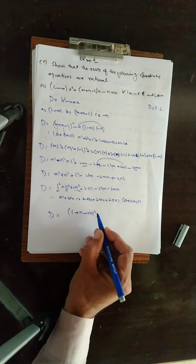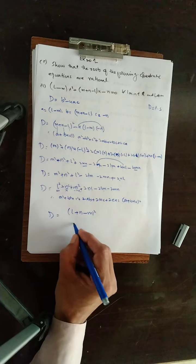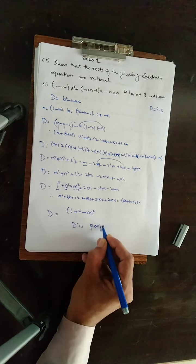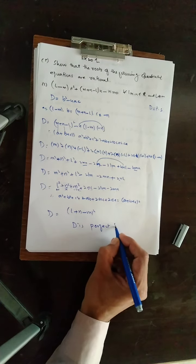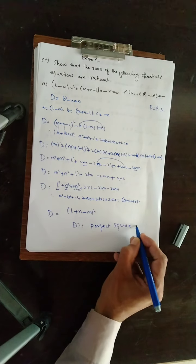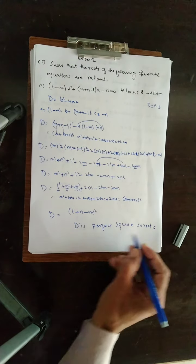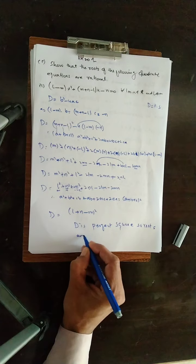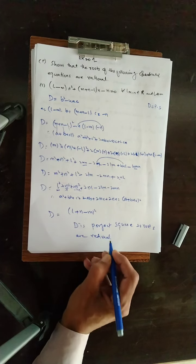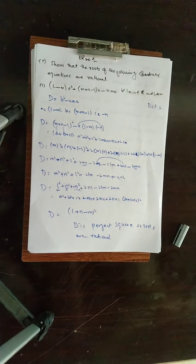Square بننے کا مطلب ہے perfect square۔ جب D perfect square بن جائے تو D is a perfect square، اور جب D perfect square ہو تو roots rational ہوتے ہیں۔